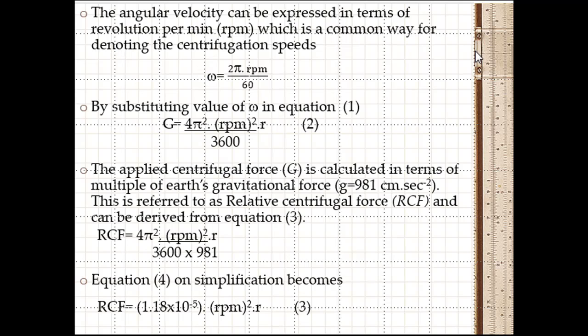Angular velocity can be expressed in terms of revolution per minute (RPM) which is a common way for denoting centrifugal speeds. ω = 2π × RPM / 60. By substituting the value of ω in equation 1,